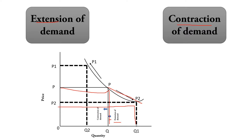The second aspect is contraction of demand. When the price increases and the demand for the product decreases, we call it contraction of demand. This is shown as an upward movement from right to left on the same demand curve. So these are the two aspects: extension of demand and contraction of demand.